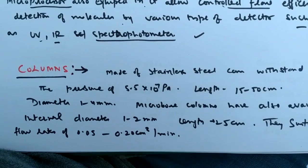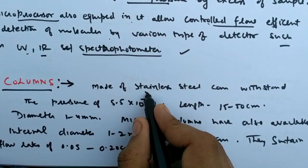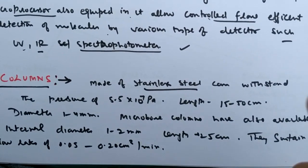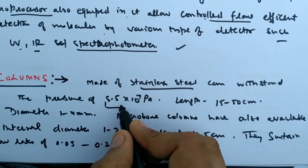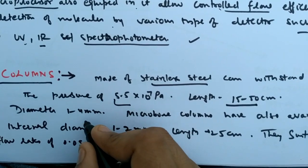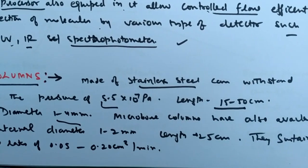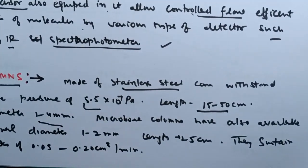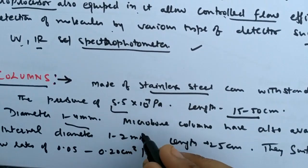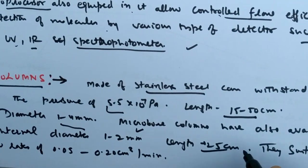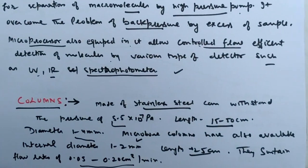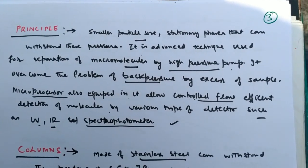The column is the stationary phase and it is made of stainless steel, which is a very solid alloy that can withstand pressure of 5.5 × 10^7 Pascal, having a length of 15 to 50 centimeters and diameter of 1 to 4 millimeters. Micro bore columns are also embedded internally and have a diameter of 1 to 2 millimeters and length of 25 centimeters, and they can sustain this level of pressure.